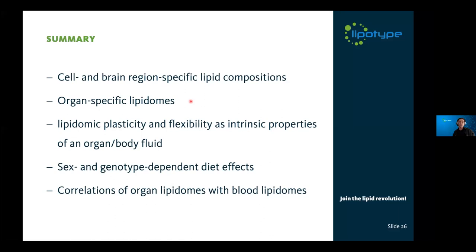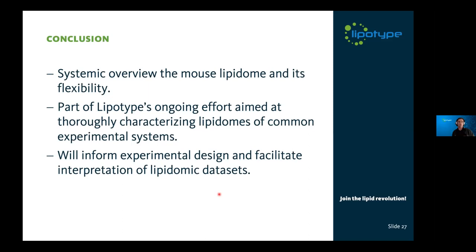In summary, I have shown cell and brain region-specific lipid compositions in mouse, organ-specific lipidomes, and we have looked at plasticity and flexibility as intrinsic properties of an organ or body fluid. We also looked at sex- and genotype-specific diet effects, and correlations of organ lipidomes with blood lipidomes. In conclusion, this is a systematic overview of the mouse lipidome and its flexibility, part of our ongoing effort to thoroughly characterize lipidomes of common experimental systems. We hope this dataset, which will be published soon, will inform experimental design and facilitate interpretation of lipidomic datasets in the future.